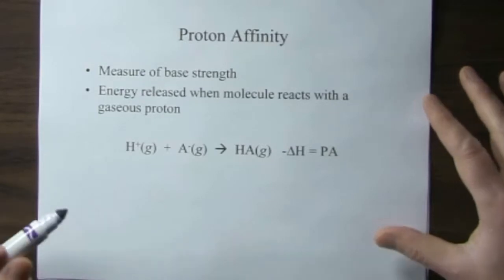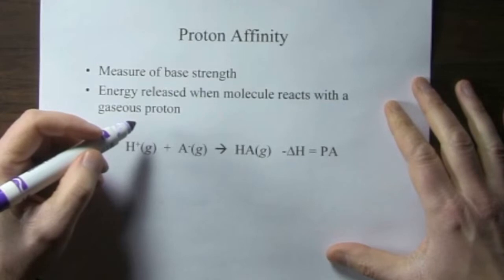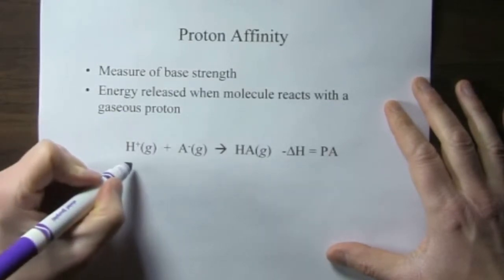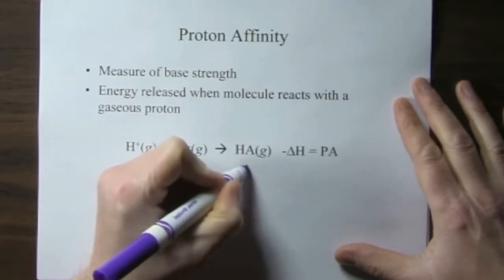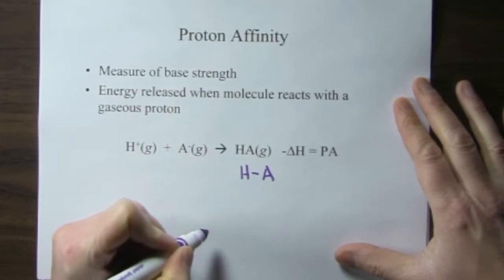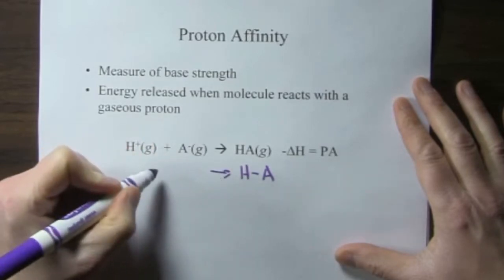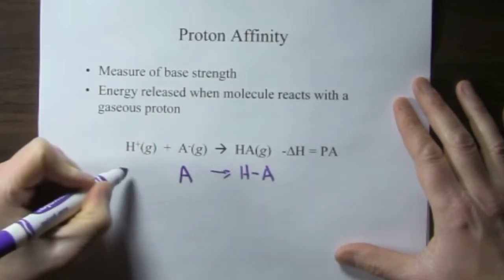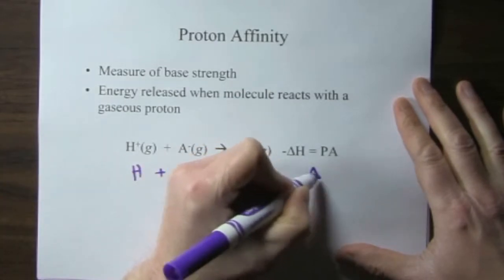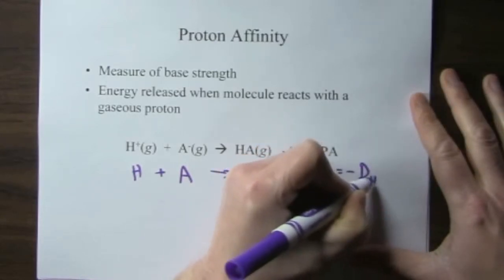And we can see that when we break down the parts of this, we have the bond dissociation energy here for the molecule HA, would give the gaseous atoms. So this delta H for this part is the negative bond dissociation energy of HA.